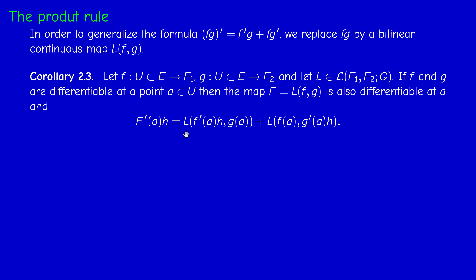If both f and g are differentiable at A, then L(f, g) — denoted capital F — is also differentiable at A, and its derivative at H is given by L(f prime(A)(H), g(A)) + L(f(A), g prime(A)(H)). Here f prime(A)(H) is an element in F_1 and g(A) is an element in F_2. This is a corollary of the previous proposition and the chain rule.